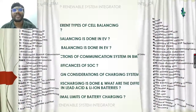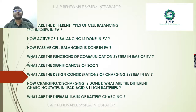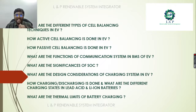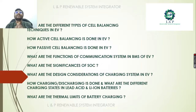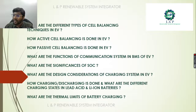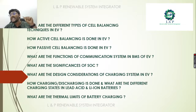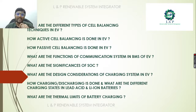So what are the things we are going to discuss today? We are going to discuss the different types of cell balancing techniques available for electric vehicles — what is active cell balancing, how it is done, and how passive cell balancing is done. We will also cover the functions of a communication system in the BMS, the significance of state of charge, design considerations for the charging system, how charging and discharging is done, the different types of charging states in lead acid and lithium-ion batteries, and the thermal limits of battery charging.